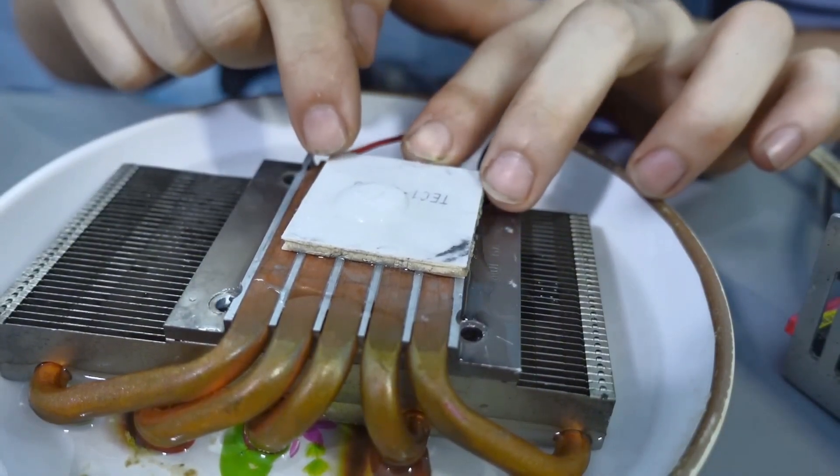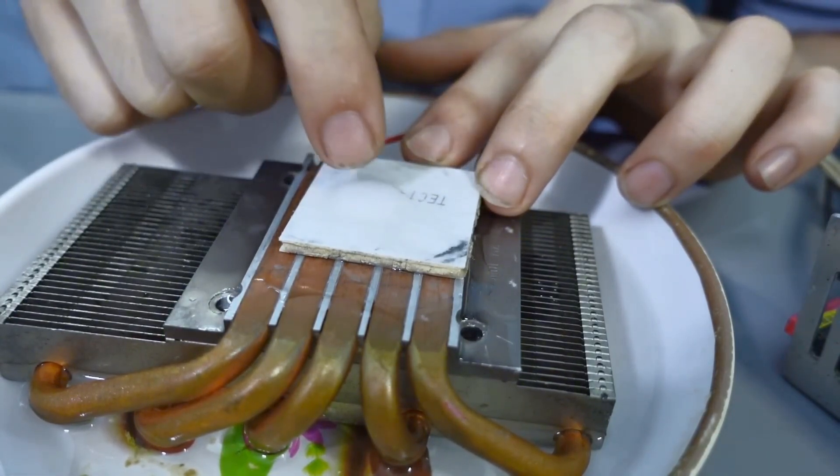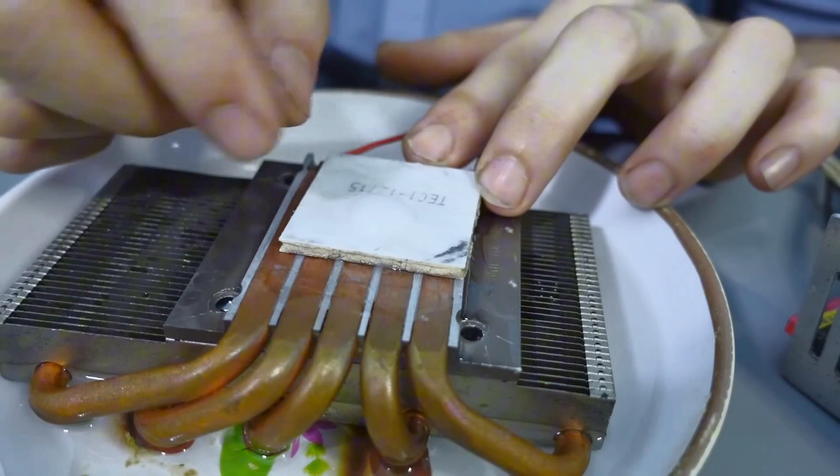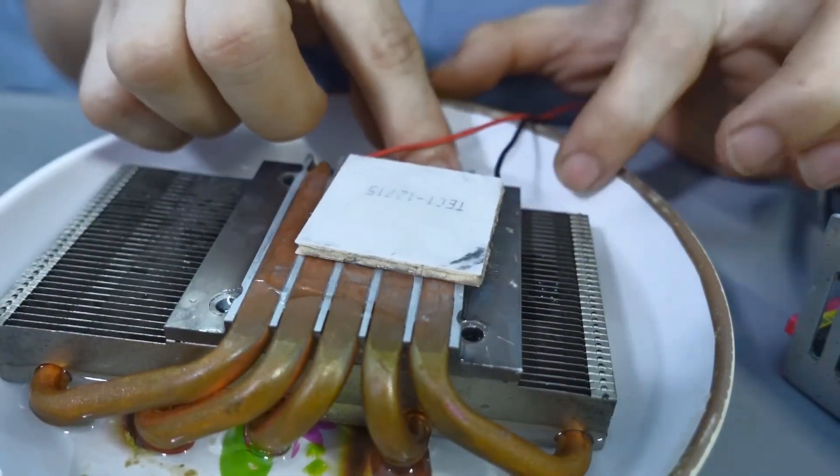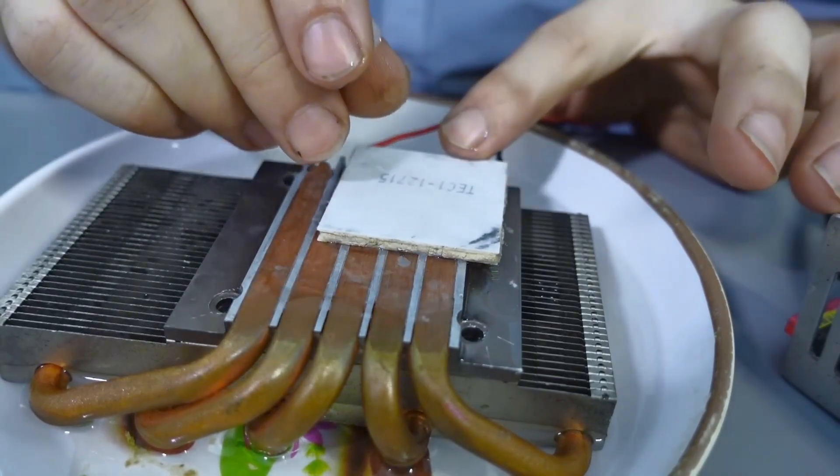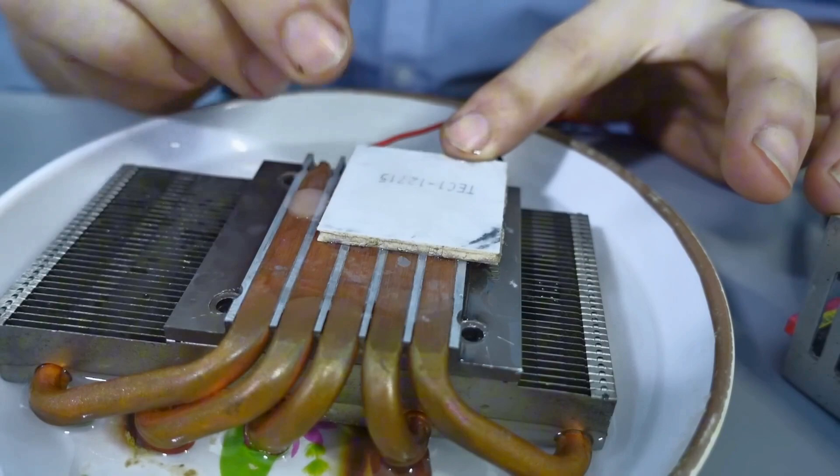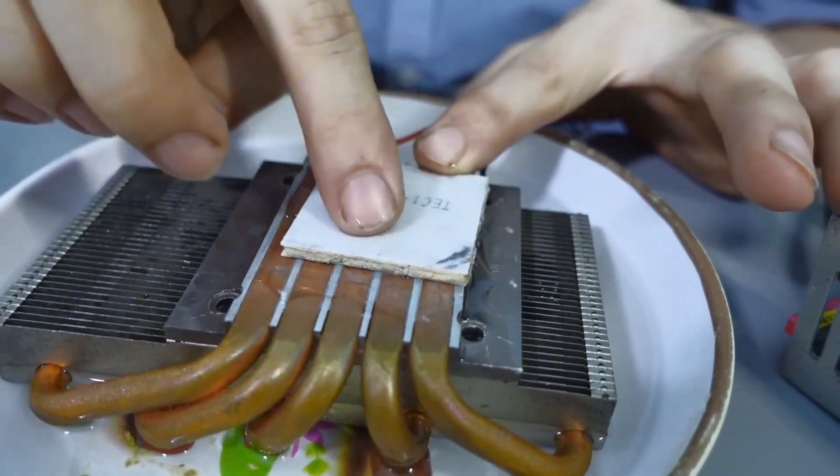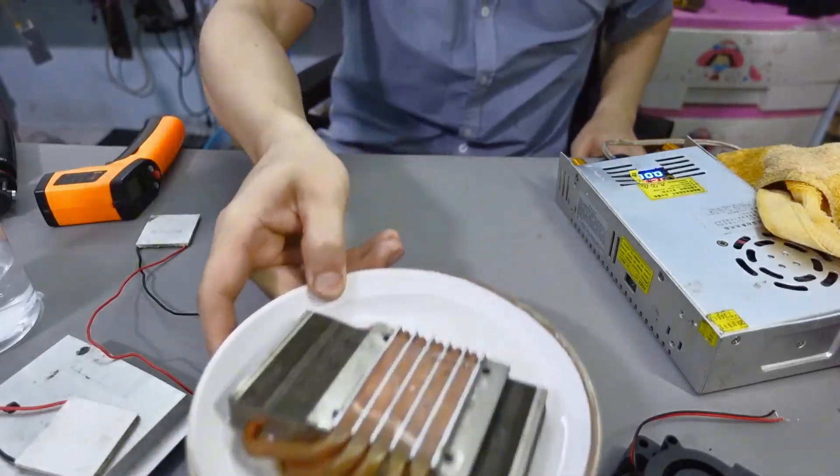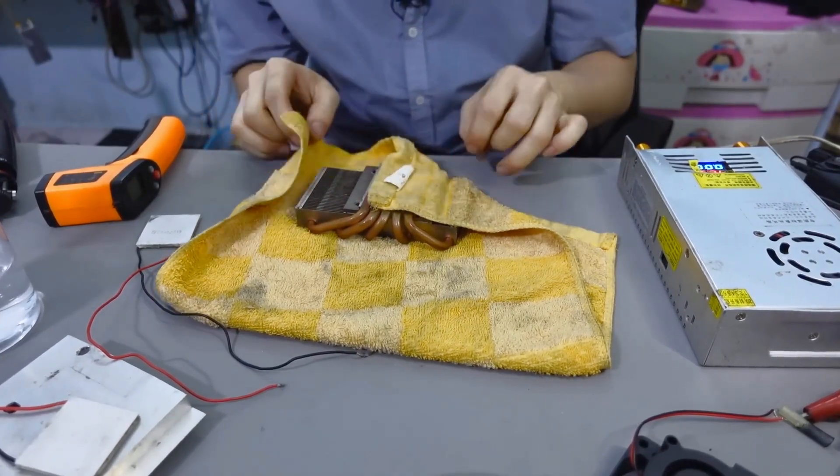Alright, now I'm gonna turn off the power so we can see what happens next. Watch closely, guys. There it is! See that? The ice is already starting to melt just like that. It disappears almost instantly once the cooling stops. Pretty cool, right? That just shows how quickly this thing responds to power. Now I'm gonna set this aside and get everything ready for the next step. We're moving on to assembling and wiring up all the modules to build our mini air conditioner.